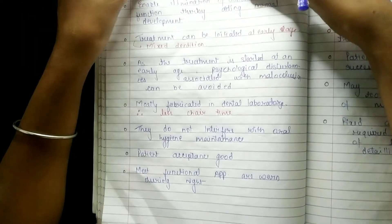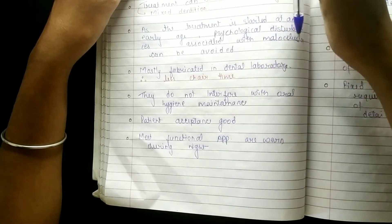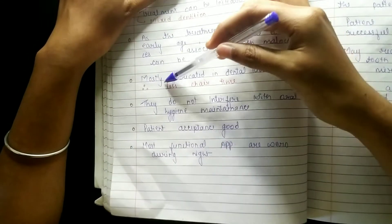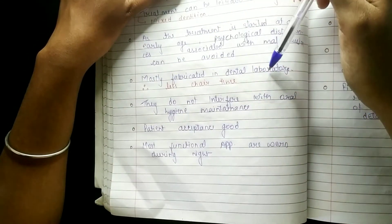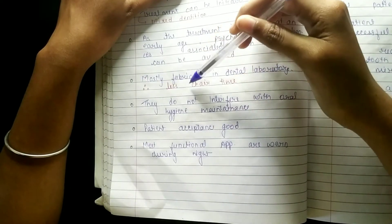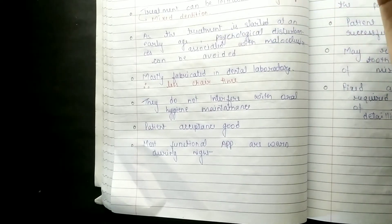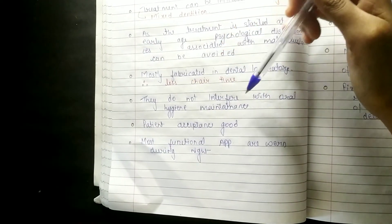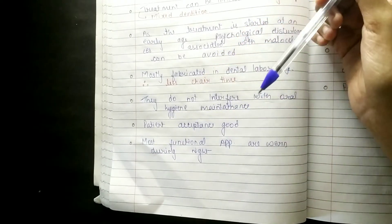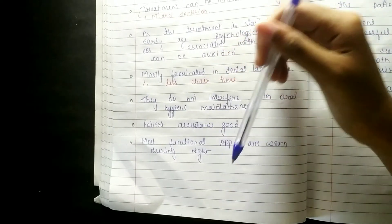As treatment is started at an early age, psychological disturbances associated with malocclusion can be avoided. Most appliances are fabricated in the dental laboratory, therefore there is less chair time. They do not interfere with oral hygiene maintenance.